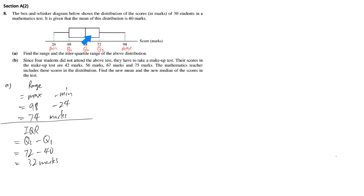Now we look at part B. Four students did not attend the test, so they took a makeup test. Their scores are provided, which means on top of this data we're going to add four more data points. It's important to identify that we're adding data to form a new dataset, and our mission is to find the new mean and new median.